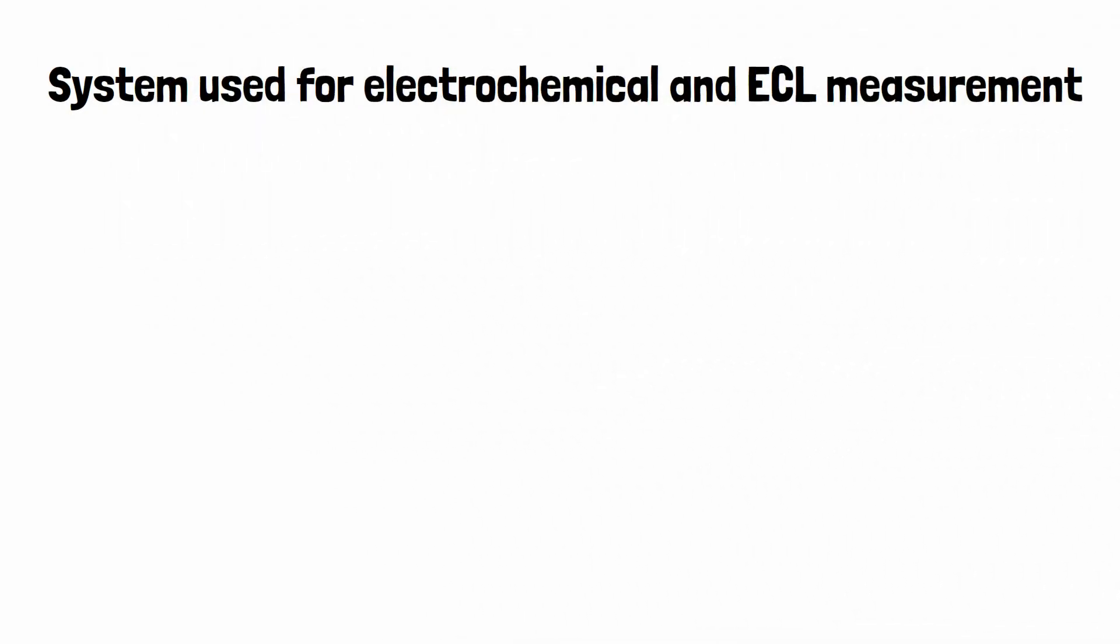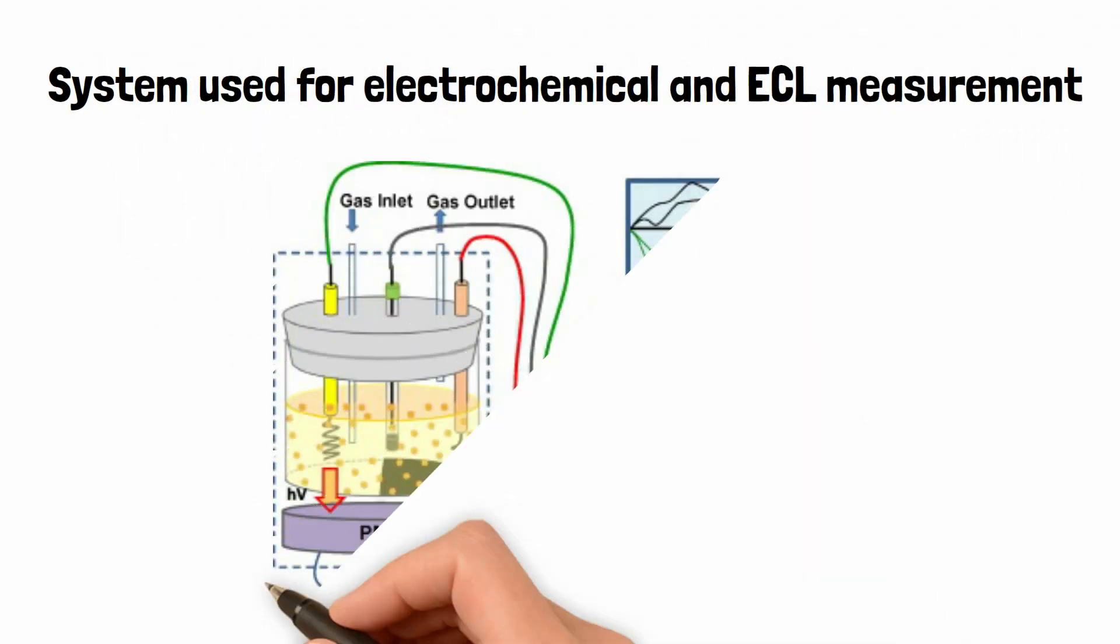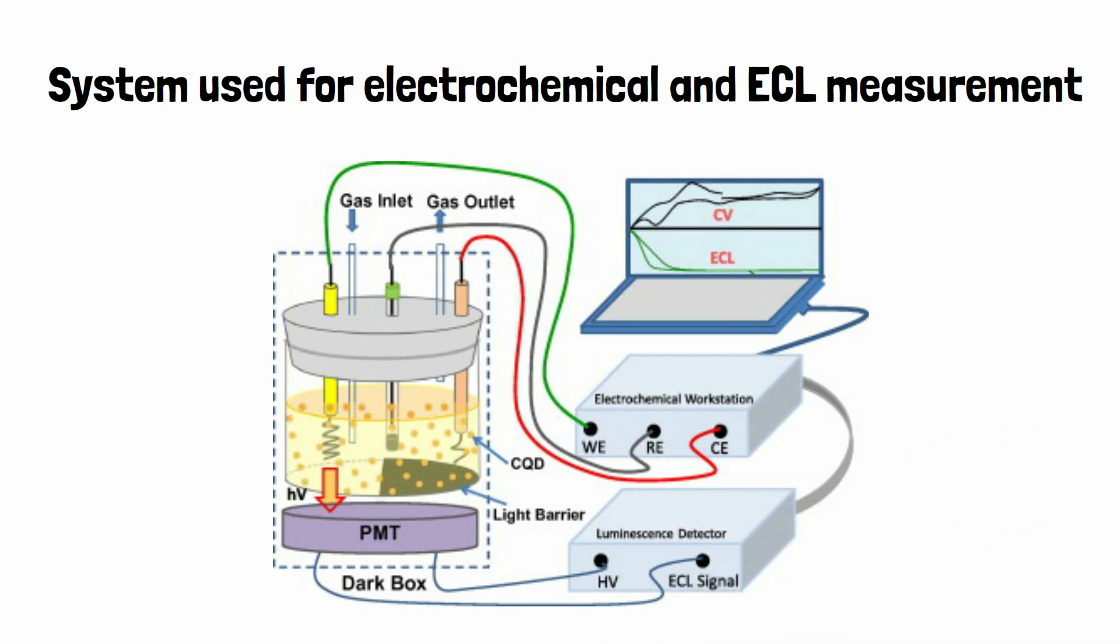About the system used for electrochemical and ECL measurement. ECL cell consisted of a glass cup, a silicon rubber plug with a gas inlet and a gas outlet, and a three-electrode system: a point wire working electrode (WE), a point wire counter-electrode (CE), and an Ag/AgCl reference electrode (RE).